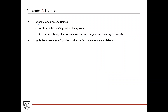Vitamin A excess is divided into acute or chronic. Acute elevation causes vomiting, nausea, and blurry vision. Chronic toxicity causes dry skin, pseudotumor cerebri, joint pain, and severe hepatic toxicity. Notably, vitamin A is highly teratogenic — exposure of a developing fetus can cause cleft palate, cardiac defects, and mental defects.